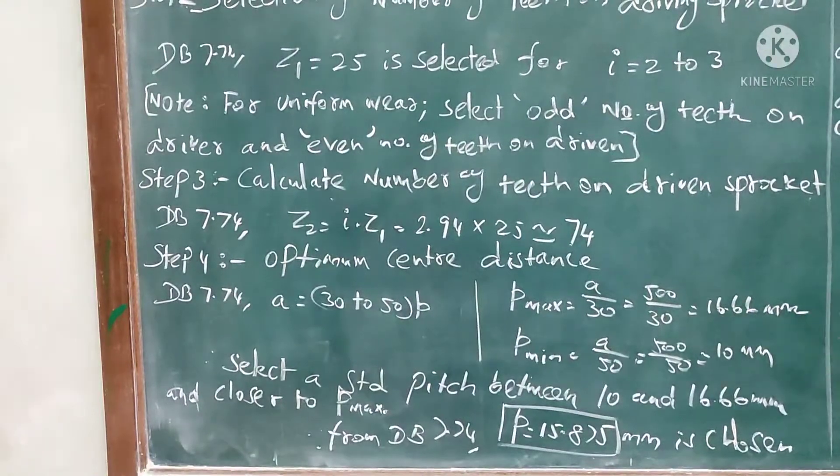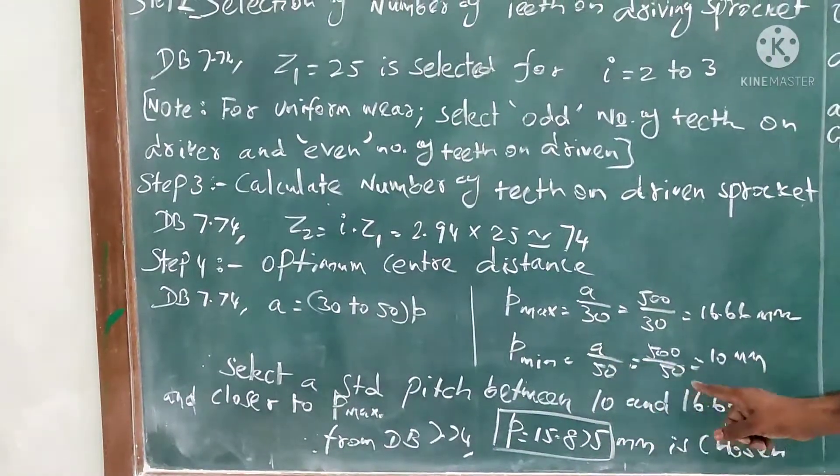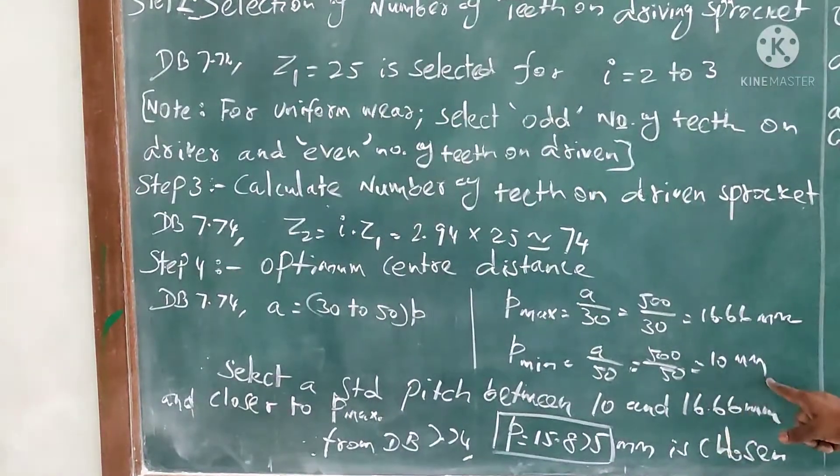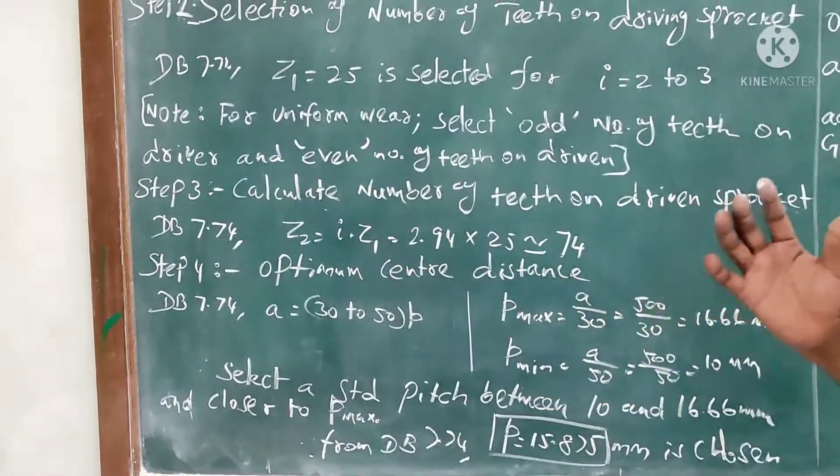500/30 = 16.66 millimeter. pmin = A/50 = 550/10 = 10 millimeter. So pitch is in between these two values, we need to select the chain pitch.